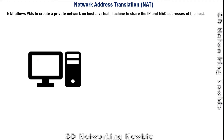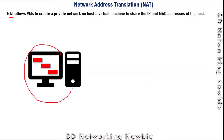Now with network address translation (NAT) networking, this option allows the virtual machines on this computer — using virtualization software — to create their own private network. That private network will only exist on that host, and all those virtual machines will actually be sharing the IP address and the MAC address of the host. That network will be contained within this host.